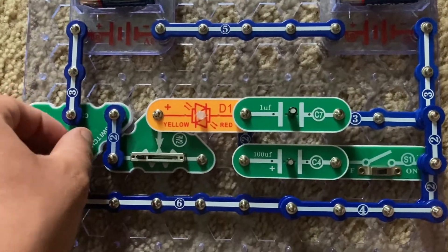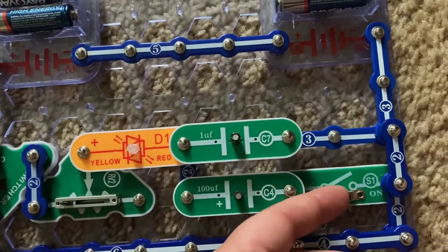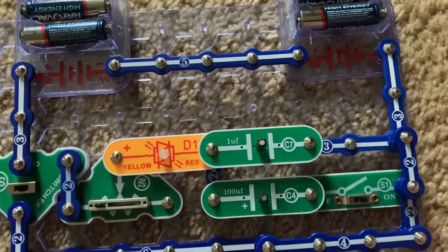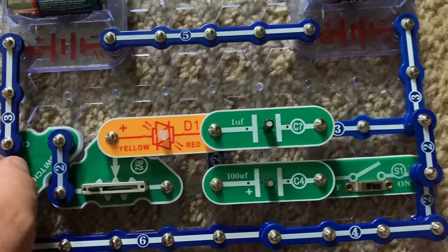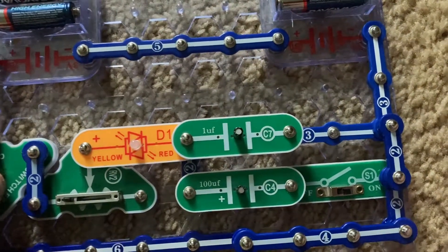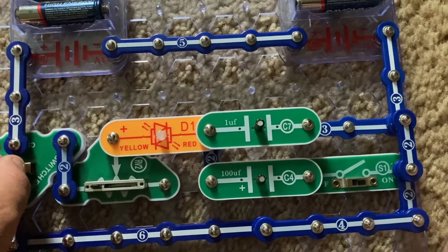But now I am going to turn on the slide switch and now the C4 capacitor is included. The C7 capacitor is bypassed. Now the LED is even brighter and it will also stay on a little bit longer too when RV2 is set to the very left.